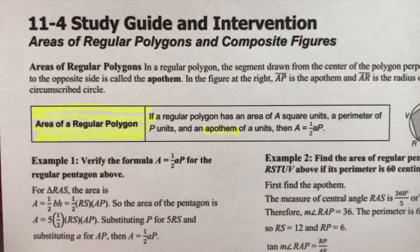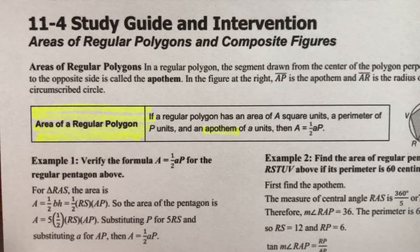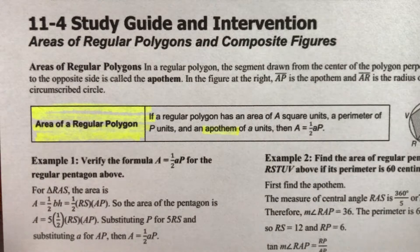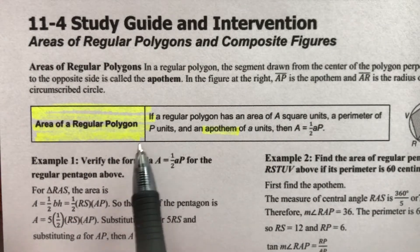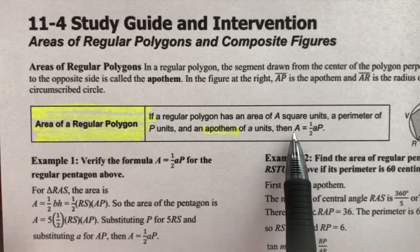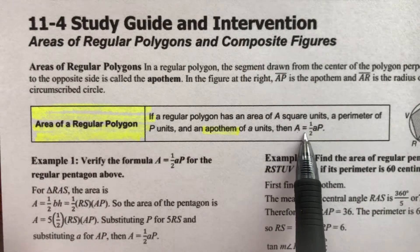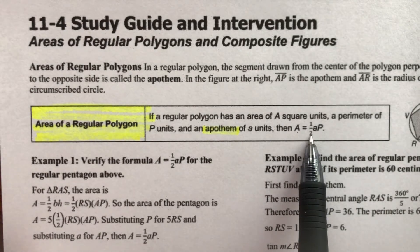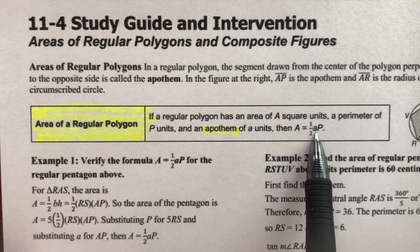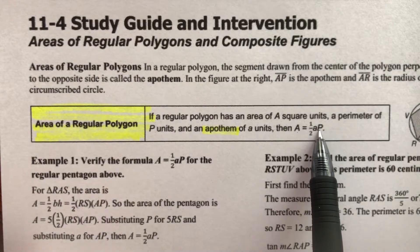This is part one of lesson 11-4, Areas of Regular Polygons and Composite Figures. In this first video, we're going to focus on the area of a regular polygon, and there's a formula they give us. The regular polygon formula: area equals one-half the apothem times the perimeter.